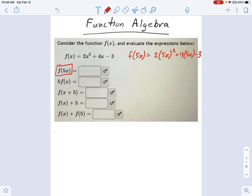So now we just simplify. That's the only job left. So this becomes 2 times 25x squared, remember the squared distributes, plus 4 times 5x is 20x, and then minus 3. And then I just need a little bit more, and we're done. It becomes 50x squared plus 20x minus 3.